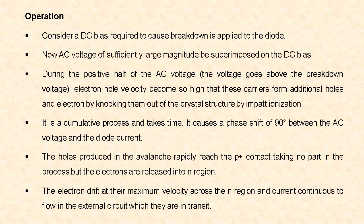Impact ionization means: a free electron with sufficient kinetic energy gained from the applied electric field strikes a silicon atom, breaks the covalent bond, and liberates electrons from the bond. This process of liberation of electrons from the bond is known as impact ionization. This impact ionization is a cumulative process and it takes time. It causes a phase shift of 90 degrees between the applied AC voltage and the diode current. The holes produced in this avalanche breakdown rapidly reach the P+ contact but do not take part in the process, while the electrons are released into the N region. The electrons drift with their maximum velocity across the N region and current starts flowing in the external circuit while they are in transit.